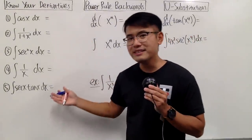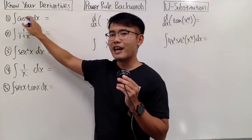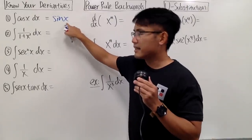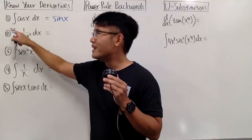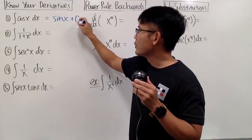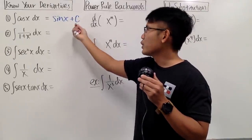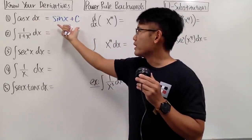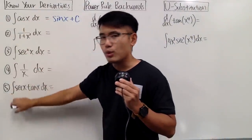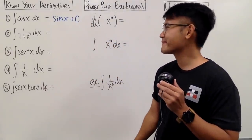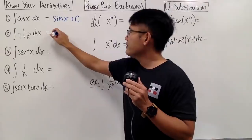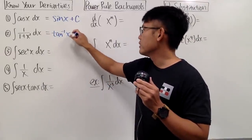Hopefully you all had a chance to try this. For the first one — derivative of what will give us cos x — the answer is positive sin x. When we differentiate sin x, we get positive cos x. Therefore, the integral of cos x is sin x. At the end, we add a constant, so we write plus c, because when we differentiate a constant c, we get zero. For the second one, the derivative of what will give us 1 over 1 plus x squared — the answer is inverse tangent x, plus c.